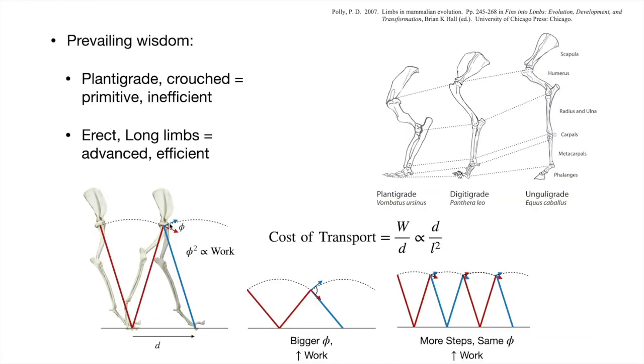Now the idea of long limbs being more economical does have a physical basis. One way to account for the work done in locomotion is to look at the velocity just before and just after the transition to the next step.